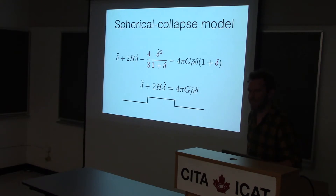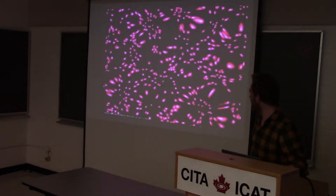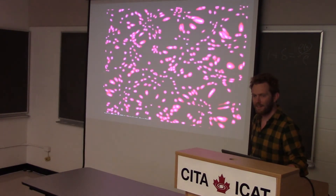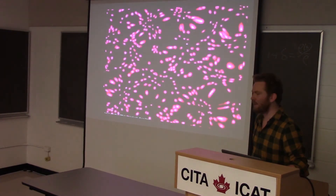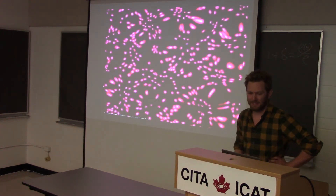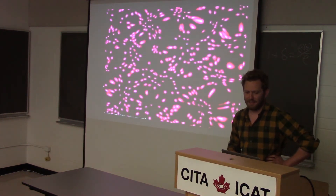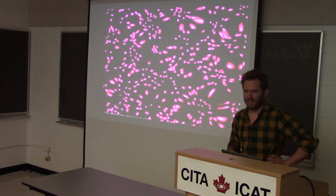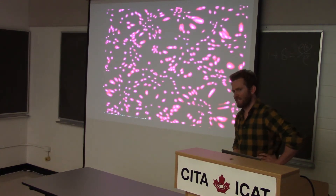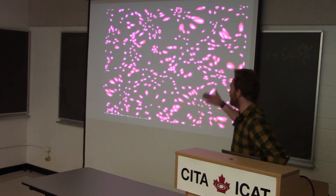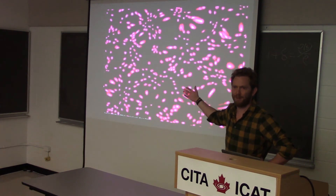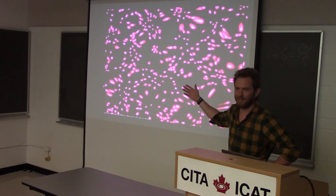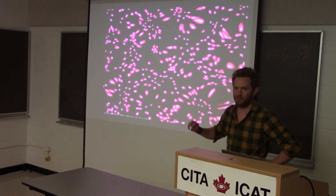Question from audience: when you lens galaxies, the shapes change but also the positions change. What is the status of trying to use the change in positions due to lensing to extract the lensing signal? Response: I don't know about the status, but I know that if you knew the initial positions, you'd be laughing because this would be a huge signal compared to the shape distortions.